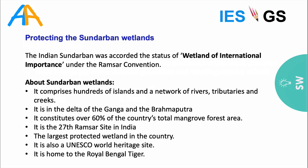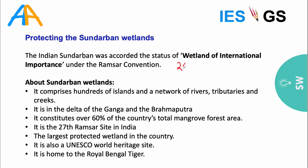Indian Sundarbans was accorded the status of wetland of international importance under the Ramsar Convention. As of the news, India had 26 Ramsar sites recognized as wetlands of international importance. With the addition of Indian Sundarbans, it became 27 sites. A further site was added subsequently, making it 28 total now.